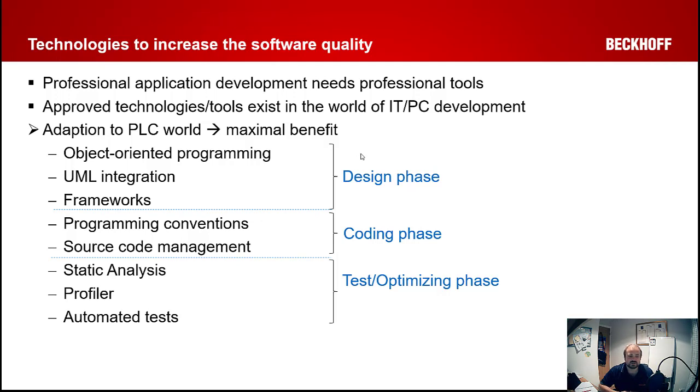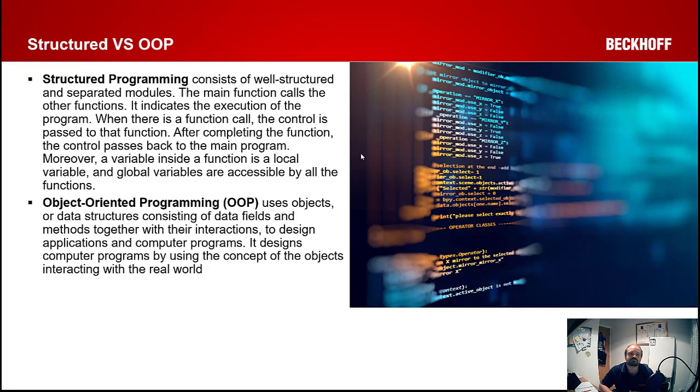Finally you've got your test and optimization phase. Once you've written the code, how do you analyze how good it is? That's where your static analysis tools come in to see how well you've agreed with your programming conventions that are rule-based on what your company requires. Profilers see how good and efficient your code is, and then automated testing so you can actually make sure the code does what you say it's going to do before it goes on a real machine. What we're concentrating on today is the object-oriented programming paradigm, which is a tool to increase your software quality.